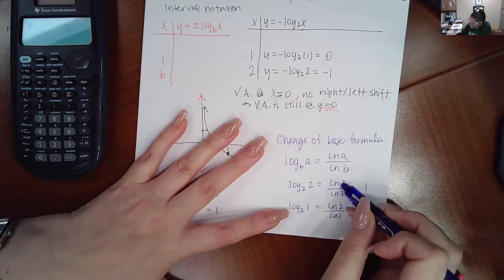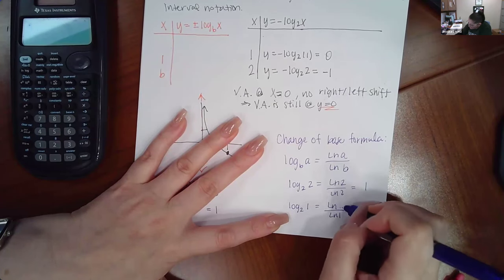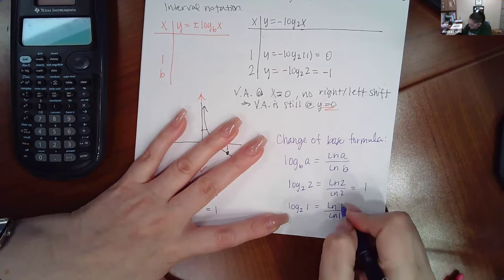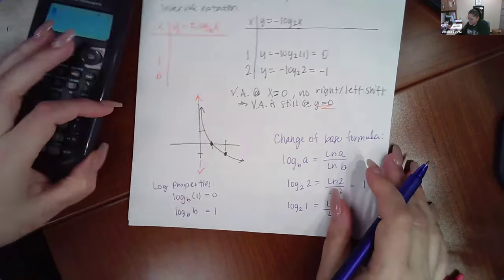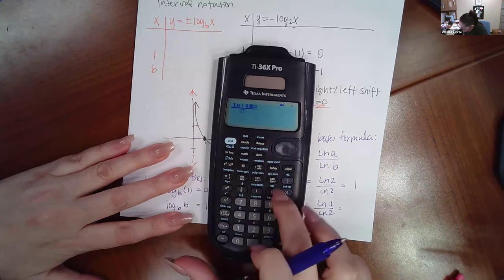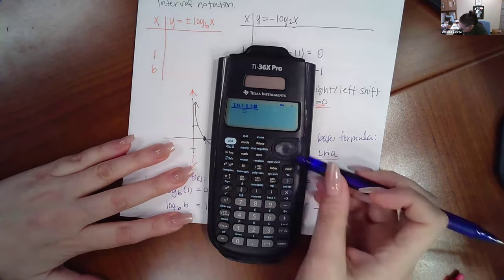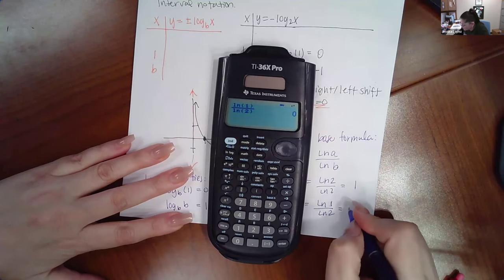But here, the argument is one and the base is two. And if I type this in my calculator fraction, and then I'm typing ln of one over ln of two, I do get that zero.